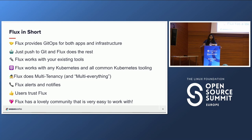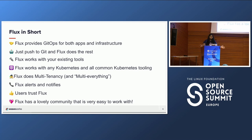Flux also has alerts and notifications — it can provide health assessments, alerting to external systems, and external event handling. You can just git push and get notified on Slack or other chat systems, or be notified if something gets out of sync due to configuration drift. Users trust Flux — as an end user myself, I wouldn't have joined and been promoting this tool if I didn't love it. The community is awesome; we welcome contributors of any kind including beginners. Flux components are built on the Kubernetes core controller runtime, so anyone can contribute and its functionality can be extended very easily.